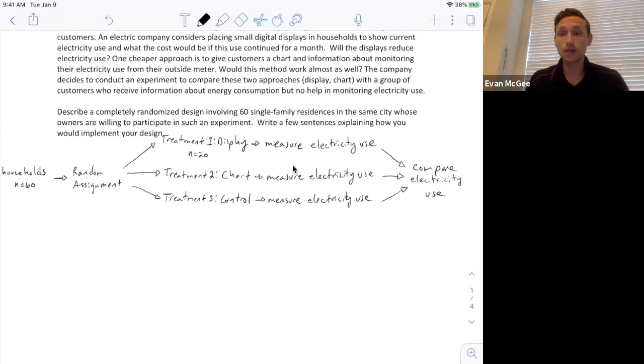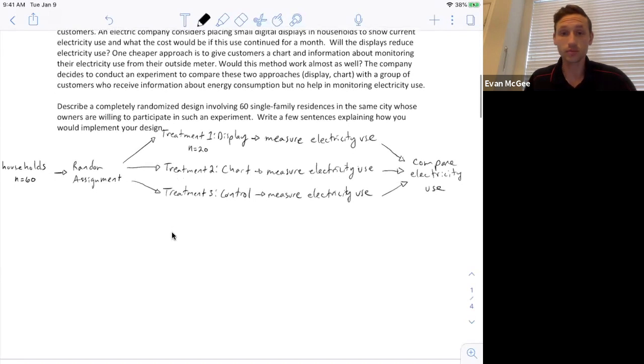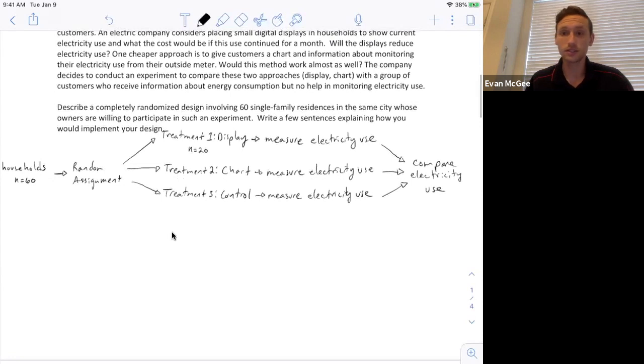But this problem is not complete because they've asked us to write a few sentences explaining it and if they ask us to describe the experiment then we're always going to have to actually write out the important parts of this experiment. If you want full credit then you can't just draw a diagram, you're expected to describe how the treatments are assigned and state what will be measured and compared.